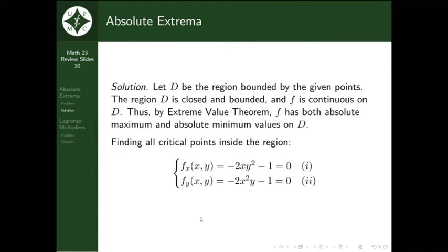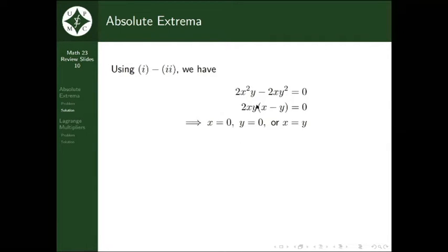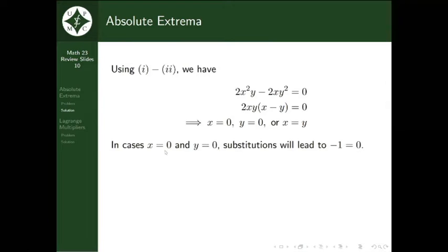Finding interior critical points is done the same way as for relative maxima: we get the partial derivatives and find the x and y values that satisfy these equations when equated to zero. By subtracting the two equations and factoring out 2xy, we get three candidate solutions: x = 0, y = 0, and x = y. But checking x = 0 and y = 0 in the original equation gives negative one equals zero, which is false, so these are not valid solutions.